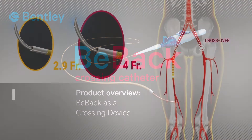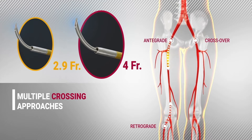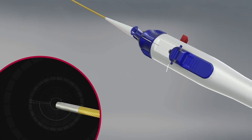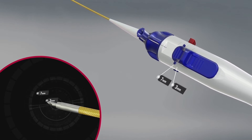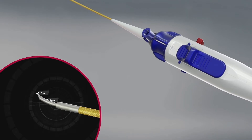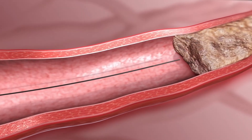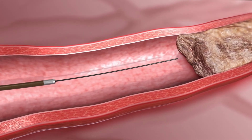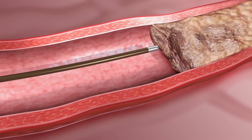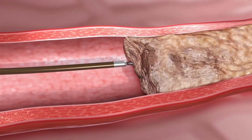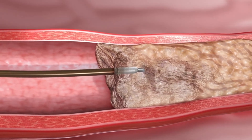The B-back catheter serves as a crossing device for crossover, integrate, and retrograde approaches. When using the B-back as a crossing device, the first two positions on the needle length selector are most applicable. The B-back is deployed with just a slight needle protrusion. When the catheter reaches the CTO, its sharp tip punctures the proximal cap and penetrates the occlusion, thus opening a path for the guide wire.